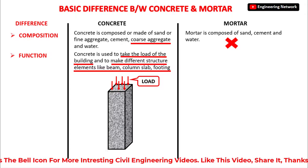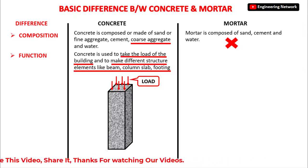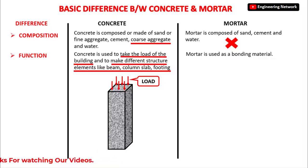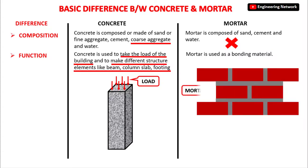On the other hand, the function of mortar in building construction is as a bonding material. For example, with two layers of bricks, we need good quality mortar placed between them to make a good connection. So the function of concrete is to make structural elements and transfer load safely, while mortar is used to bond different brick layers.